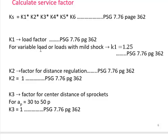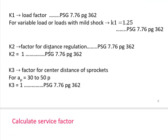K1 is the load factor. For variable load or loads with mild shock, K1 is 1.25, as given in design data book table 7.76 — it can be mild, medium, or heavy shock. K2 is the factor of distance regulation, taken as 1. K3 is the factor for center distance of sprockets. If the center-to-center distance is between 30 to 50 times the pitch, the K3 factor can be taken as 1.